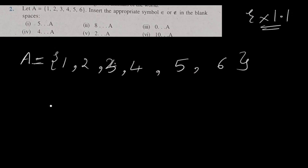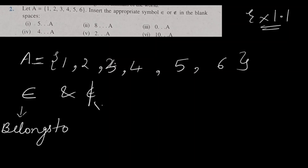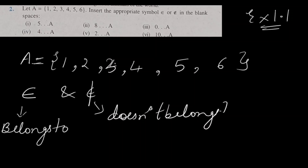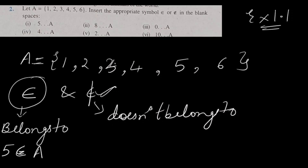Now what we have to do? We have to insert one symbol — either ∈ (belongs to) or ∉ (does not belong to). So if any element belongs to set A, we write the belongs-to symbol, otherwise the does-not-belong-to symbol. For example, 5 is present in this set, so we write 5 ∈ A.